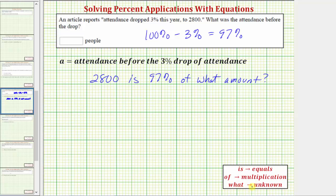For this problem, we'll use the variable a for the unknown, which is the attendance before the three percent drop. 'Of' means multiplication and 'is' means equals.